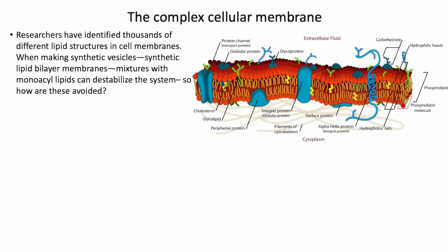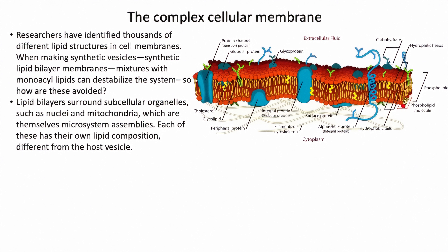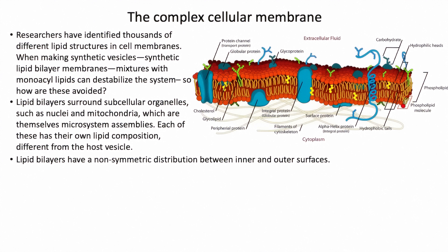Mixtures of monoacyl lipids destabilize the system — when you have monoacyl lipids, those will destabilize the system, so you can't use those. Lipid bilayers surround subcellular organelles such as nuclei and mitochondria, which are themselves microsystem assemblies. Each has its own lipid composition. In a lipid bilayer, some lipids point out toward water, some point in toward the water on the interior of the cell, and the outside ones are different from the inside ones. Nobody knows how that was done. Every protocell experiment uses homogeneity throughout, so it's not really a protocell — it's not really reminiscent of a cell.